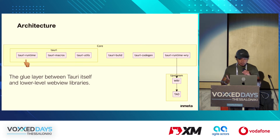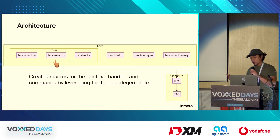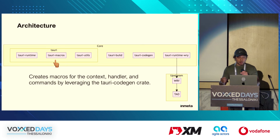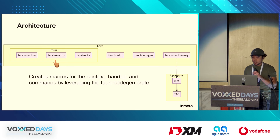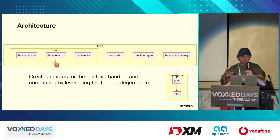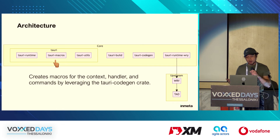This crate is a glue layer between Tauri itself and the lower-level WebView libraries. This one generates macros for the context handler commands using the Tauri codegen crate. In Rust, macros are a powerful feature that allows you to write code that generates other code. They are similar to functions but are processed at compile time, which means they can manipulate the structure of the code itself. This can be particularly useful for reducing boilerplate, creating domain-specific languages, or implementing patterns that would otherwise be hard to configure.